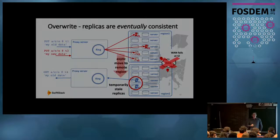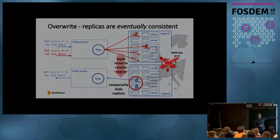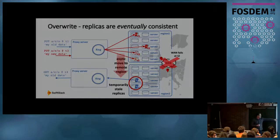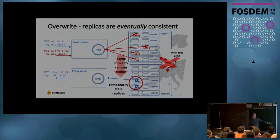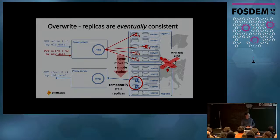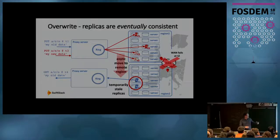This gets more interesting during an overwrite operation. If data was written at T1 and the WAN fails at T2, an overwrite at T3 will write two replicas overwriting old ones in region one and two to temporary locations in region one — but old replicas remain in region two. Again, we see the eventual consistency effect: there is a window of time while the WAN is unavailable when reads in the second region may return temporarily inconsistent data. Once the network heals, the background processes fix that.